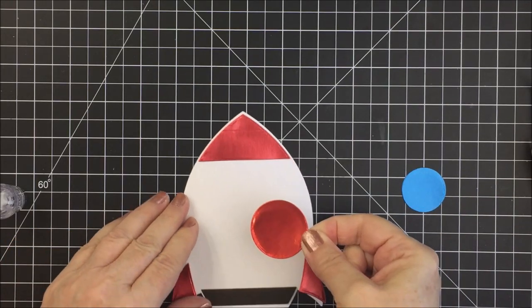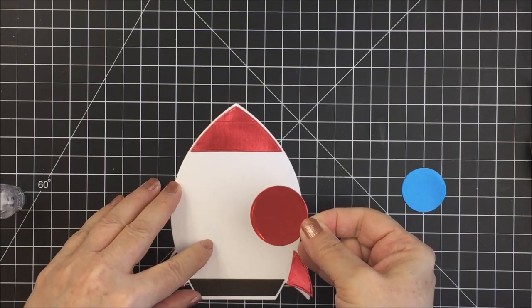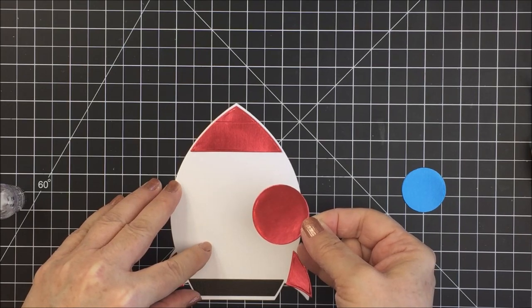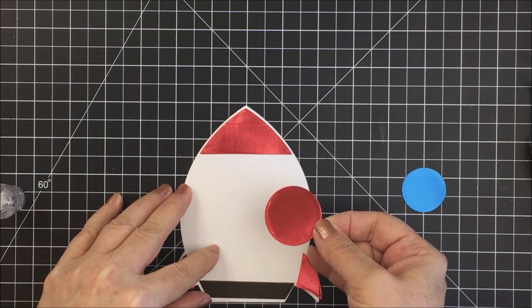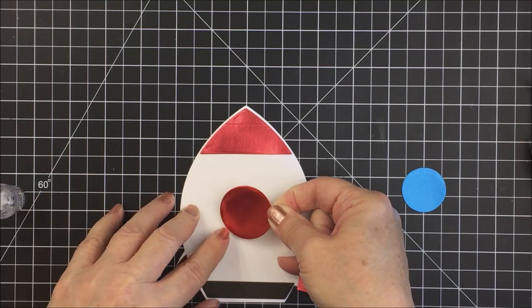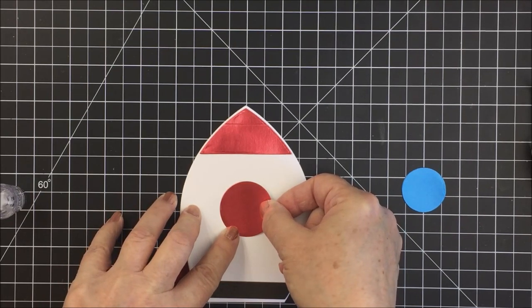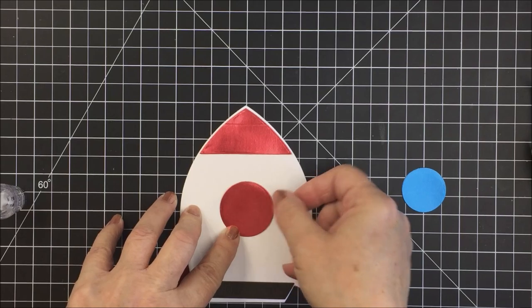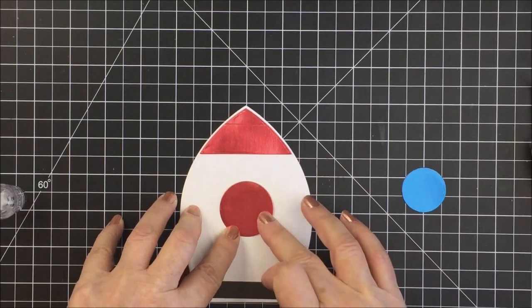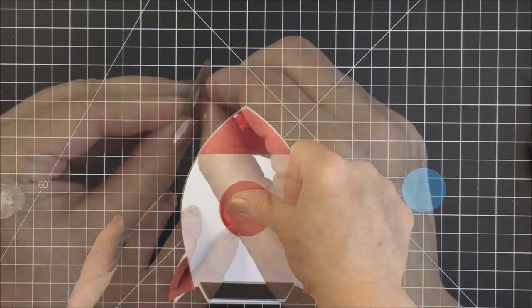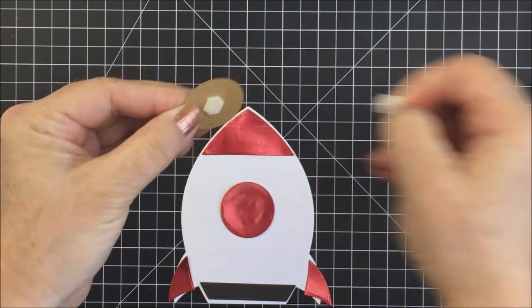Now I'm going to just take these other pieces and use my liquid adhesive to glue those down. I'm going to use the lines on my grid mat to help me kind of eyeball where the center of my ship is. You could also, if you were concerned about getting it absolutely perfectly in the center, just measure that with your ruler and mark it with a pencil.